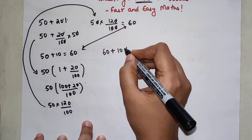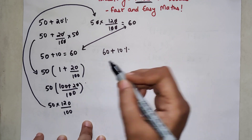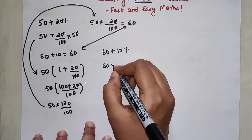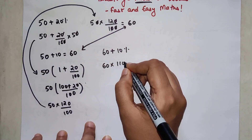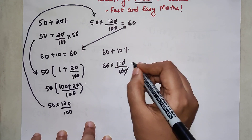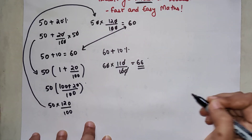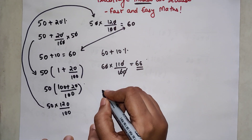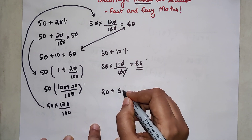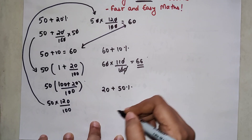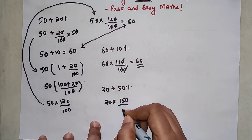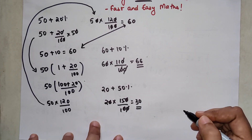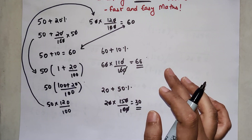Let's quickly find the value when 60 is increased by 10 percent. We do 60 into 110 upon 100; the zeros cancel and the final answer is 66. Now let's try one more: 20 increased by 50 percent. That becomes 20 into 150 upon 100, giving a final answer of 30.